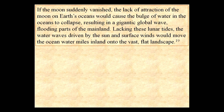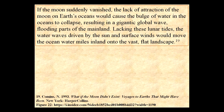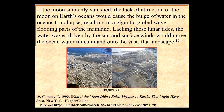If the moon suddenly vanished, the lack of attraction of the moon on Earth's oceans would cause the bulge of water to collapse, resulting in a gigantic global wave flooding parts of the mainland. Lacking these lunar tides, the water waves driven by the sun and surface winds would move the ocean water miles inland over the vast, flat landscape — devastation.